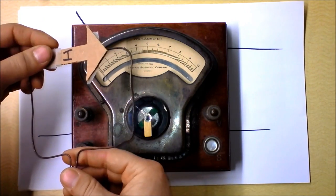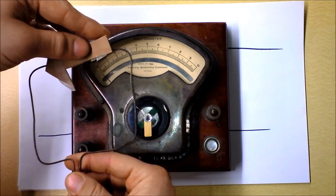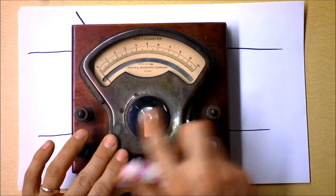If the current's going this way, it'll rotate this way. And if the current's going the other way, it'll probably rotate the other direction. And here's a practical application of that. We can measure currents, and we can measure voltages as well.